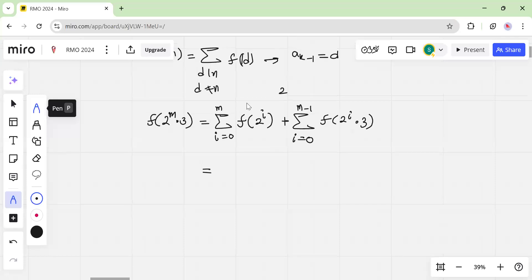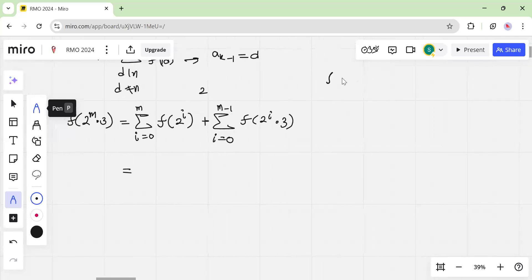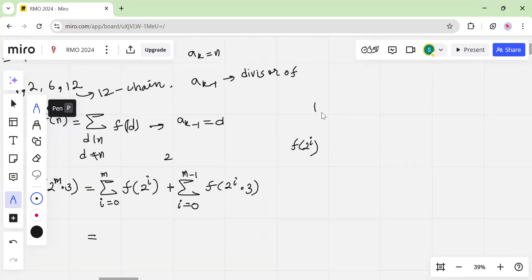Okay, so first let's work out this. What is f of 2 to the i? So the thing is that we are going in powers, right? So we will have 1, which is 2 to the 0, and then you have some power of 2, and then some other power of 2, and so on. And like divisibility is of course not a problem, because powers of 2 divide each other.